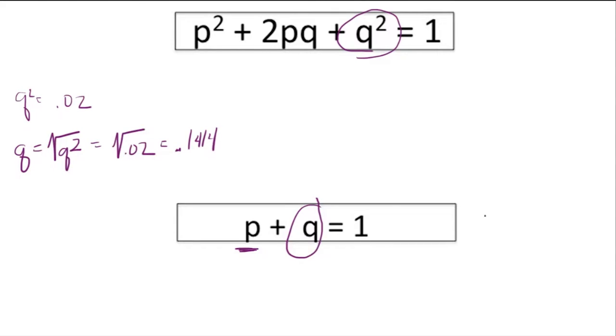If we use this equation, p + q = 1, then if we know either p or q we can easily find the other one. We can rearrange that equation: p equals 1 minus q, and in this case 1 minus 0.1414, which gives us 0.8586.